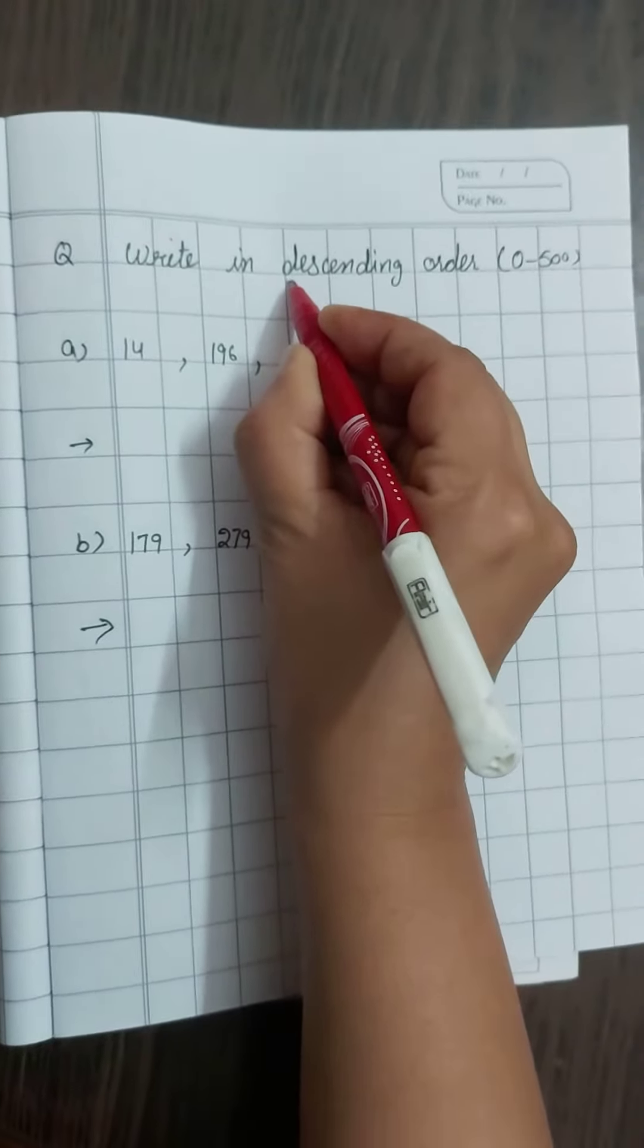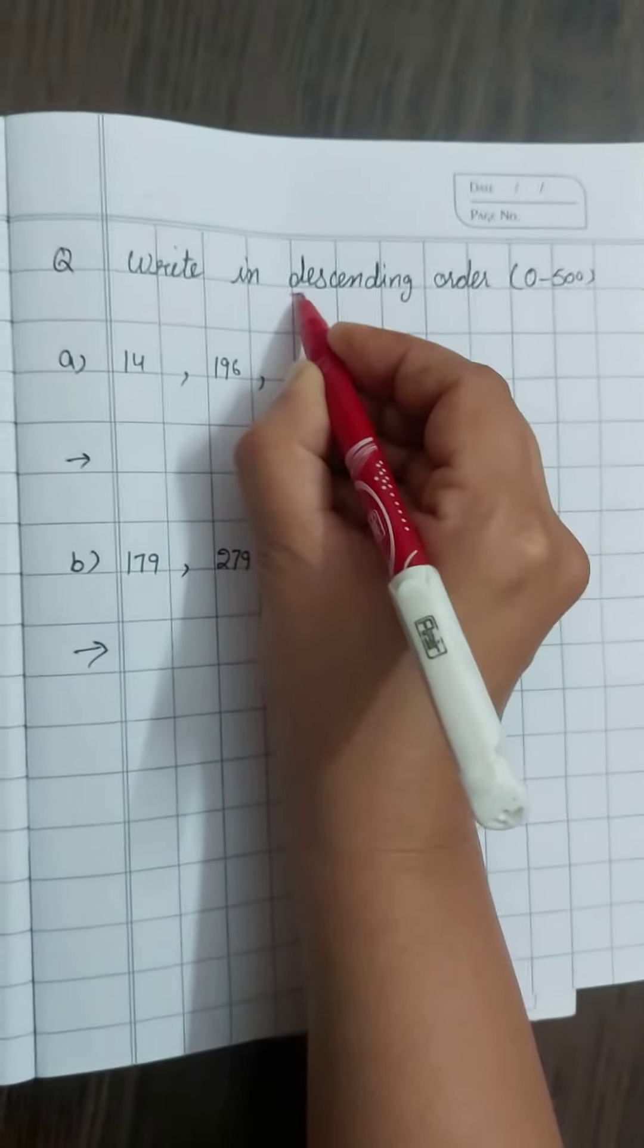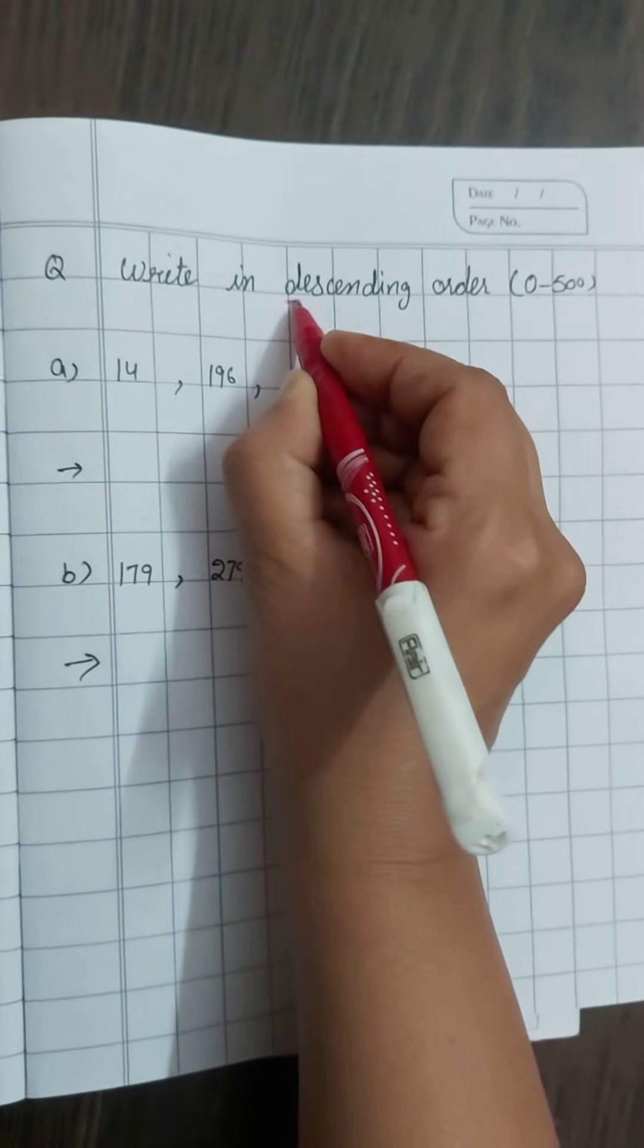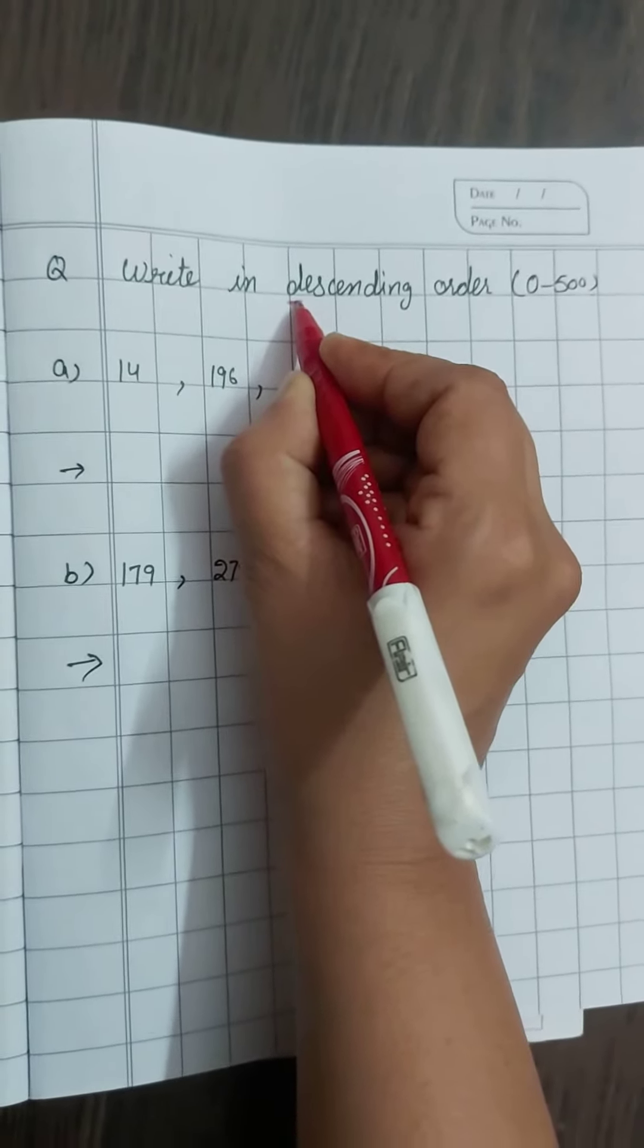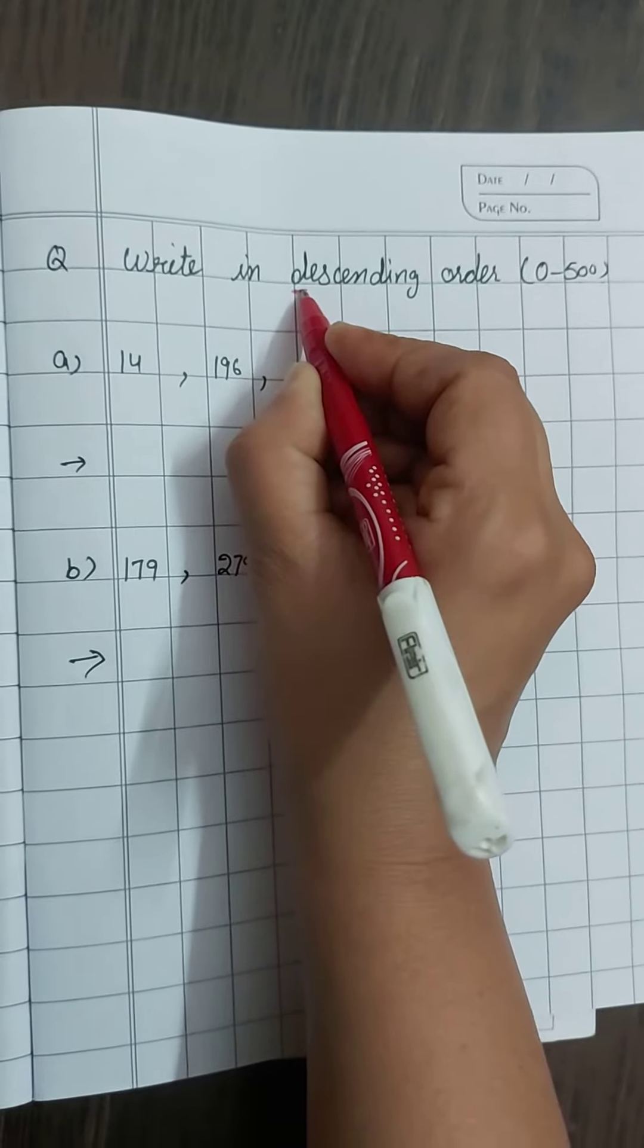First letter is D. D is a dinosaur. Dinosaur is a big animal. So we will start from biggest number.